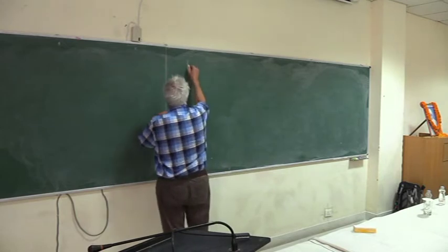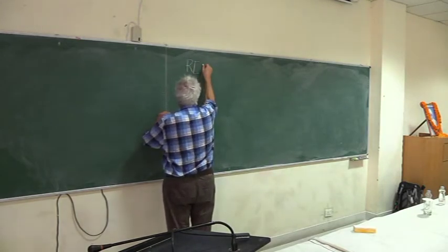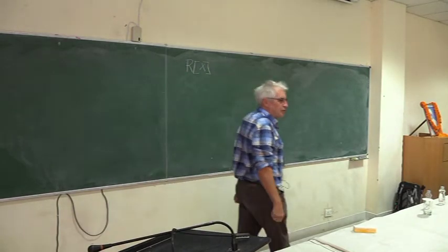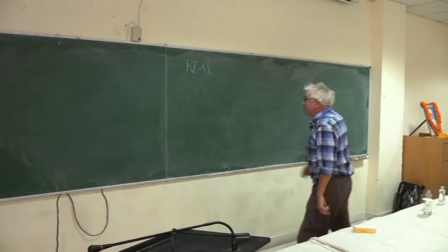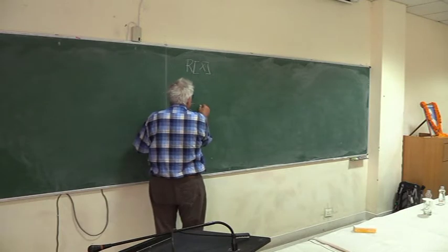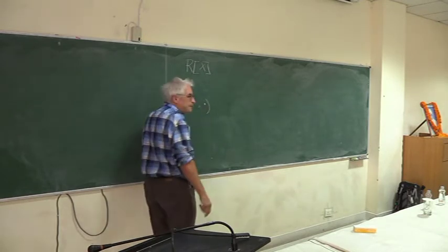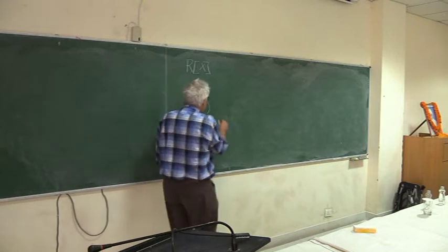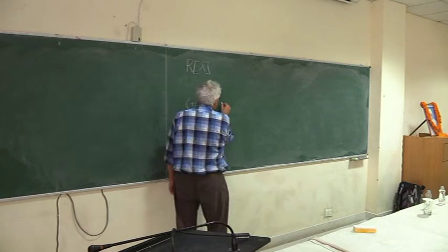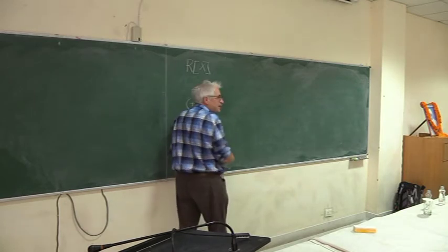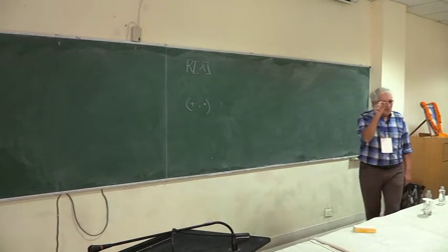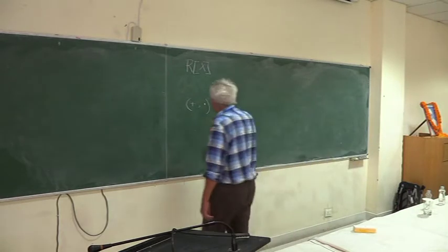I start with the ring of polynomials in one unknown. These are polynomials in one unknown. In this ring you have operations — you can add them and you can multiply them. But there's something missing: division is missing. At school we wrote division like this, but division is missing here.